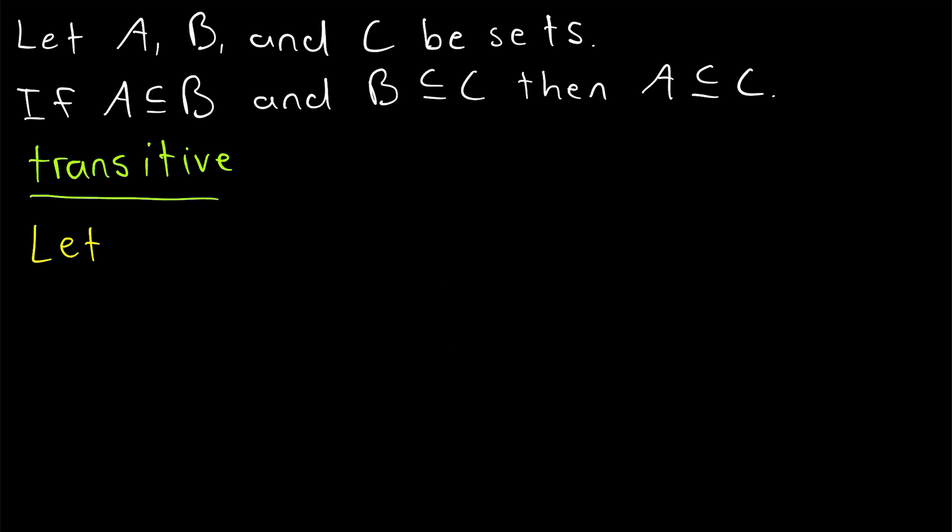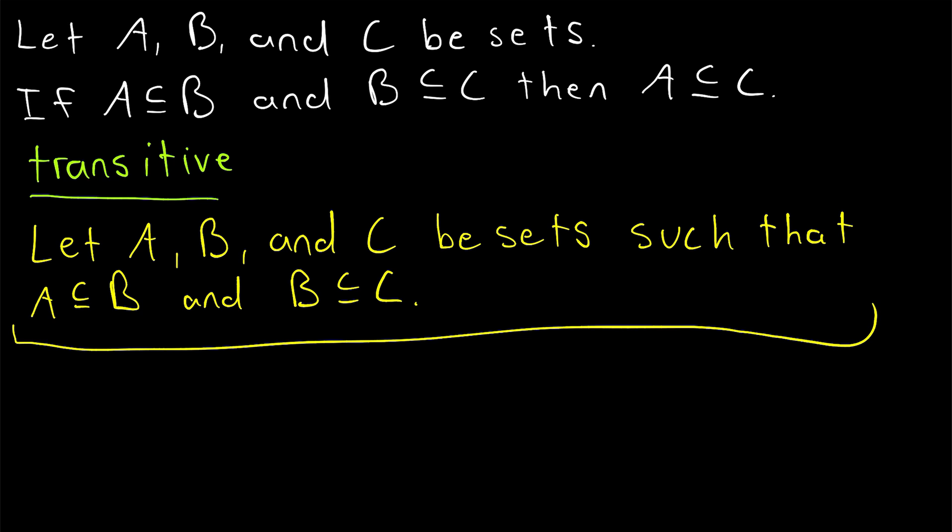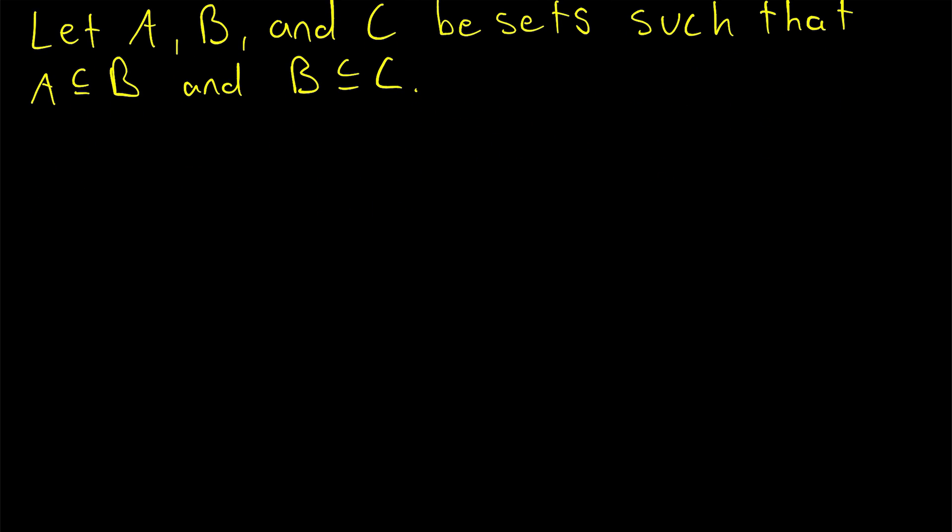But just to be sure, let's go through the proof. So this is what we call the hypothesis. We assume that A, B, and C are sets. A is a subset of B, and B is a subset of C. We want to show that this forces A to be a subset of C.